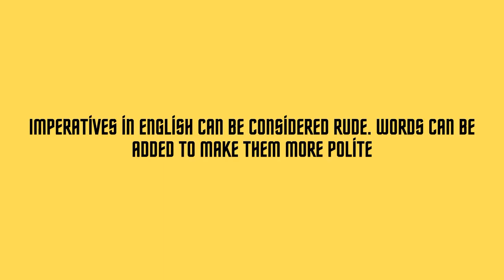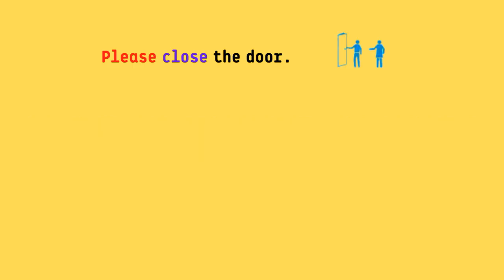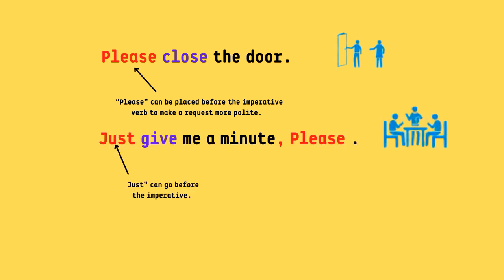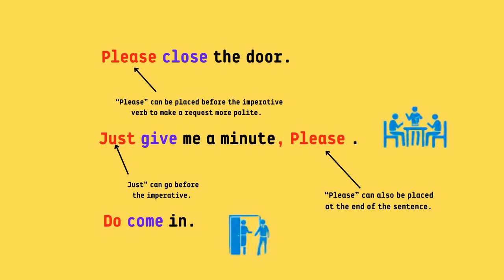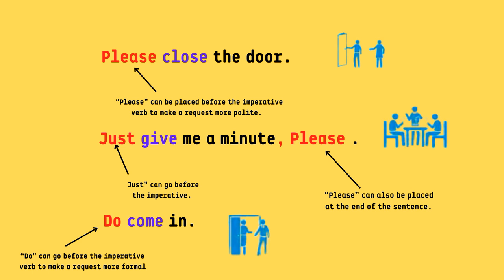Polite requests. Imperatives in English can be considered rude, so words can be added to make them more polite. Please close the door. Please can be placed before the imperative verb to make a request more polite. Just give me a minute, please. Just can go before the imperative. Please can also be placed at the end of the sentence. Do come in. Do can go before the imperative verb to make a request more formal.